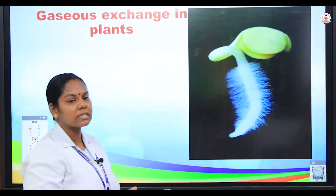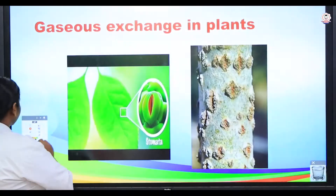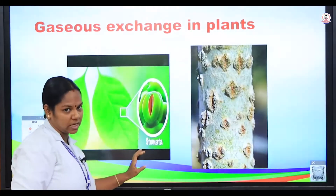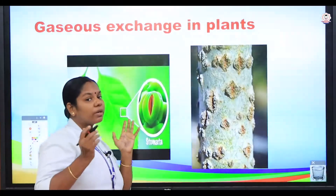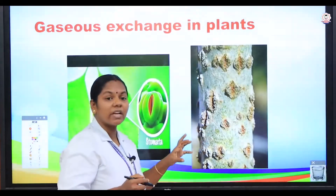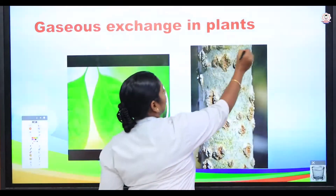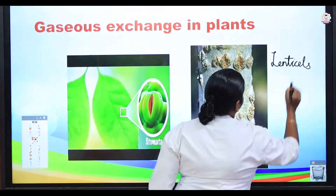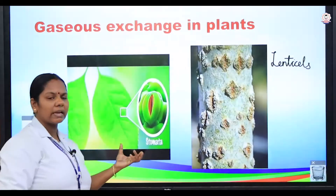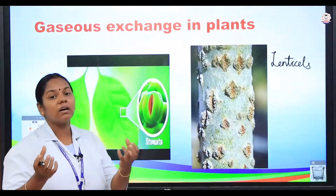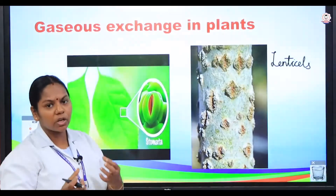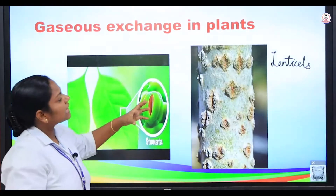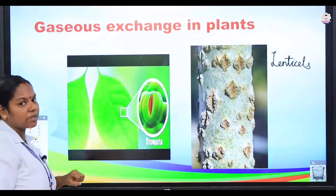Then what happens in higher plants? In the higher plants, respiration takes place through the minute openings called stomata, and also in the woody bars you can see structures we call lenticels. These lenticels and stomata are helpful in respiration — they absorb oxygen and carbon dioxide and diffuse it into the plants, and give out oxygen. This is the gaseous exchange that takes place in plants.